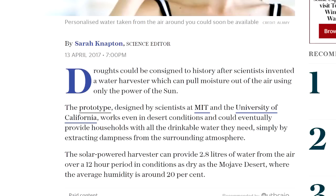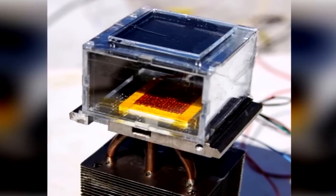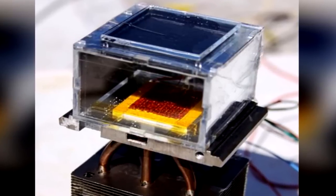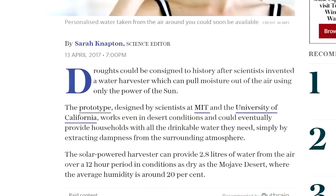Sarah Napton, science editor. Droughts could be consigned to history after scientists invented a water harvester that can pull moisture out of the air using only the power of the sun. The prototype, designed by scientists at MIT and the University of California, works even in desert conditions and could eventually provide households with all the drinkable water they need simply by extracting dampness from the surrounding atmosphere.